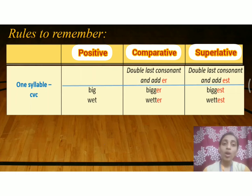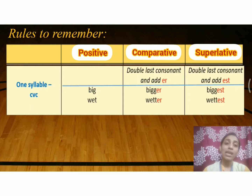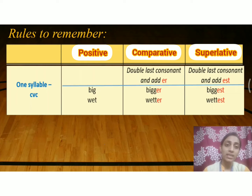For adjectives in CVC form, we should double the last consonant and add -er to change into comparative form, and double the last consonant and add -est for superlative form. The comparative form of 'big' is B-I-G-G-E-R: bigger. The superlative form of 'big' is B-I-G-G-E-S-T: biggest.